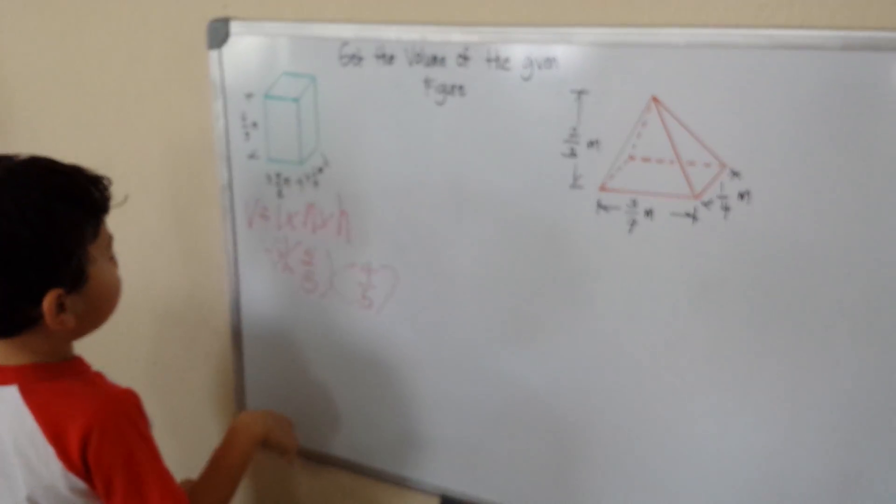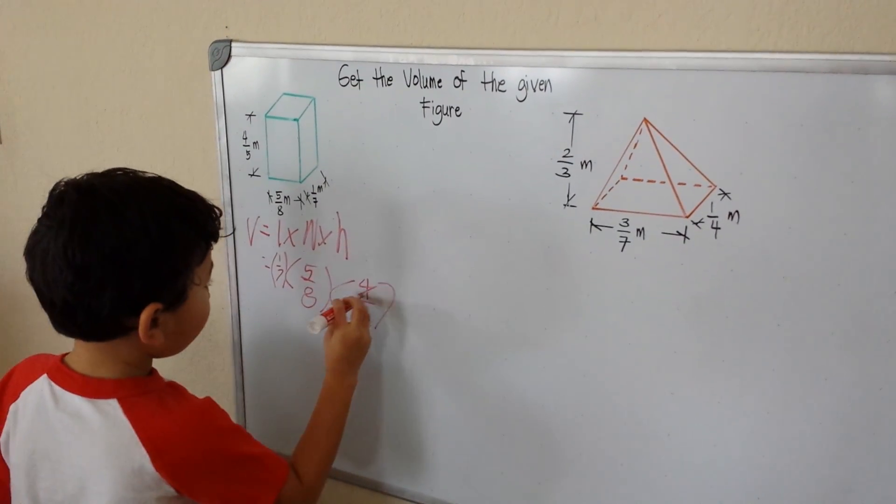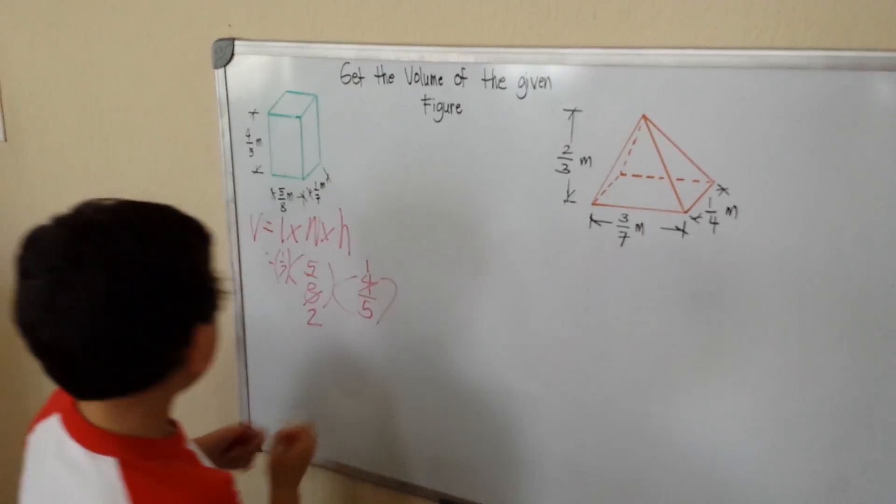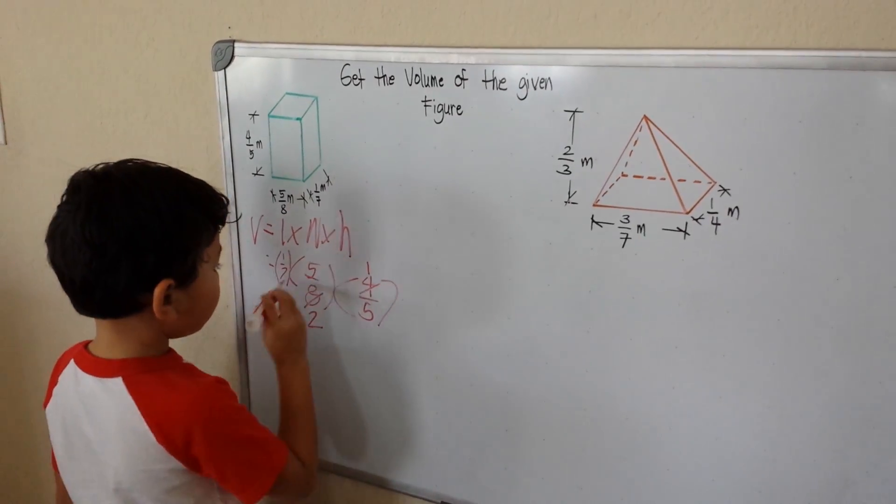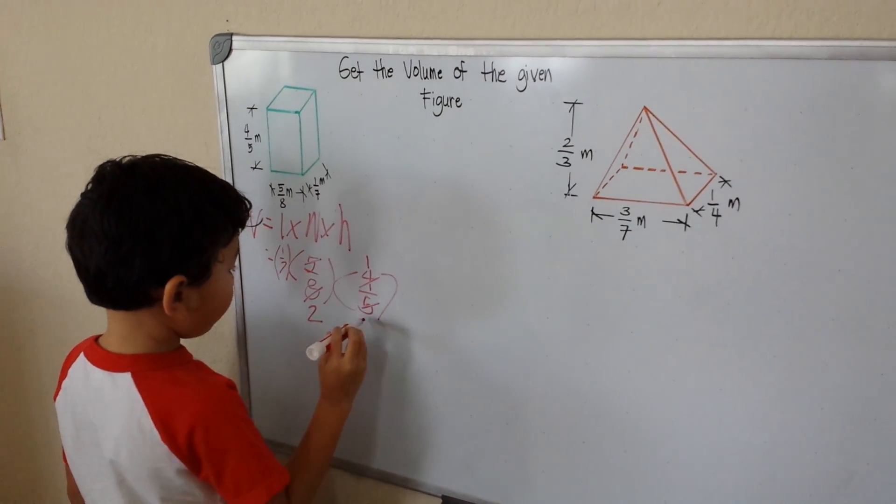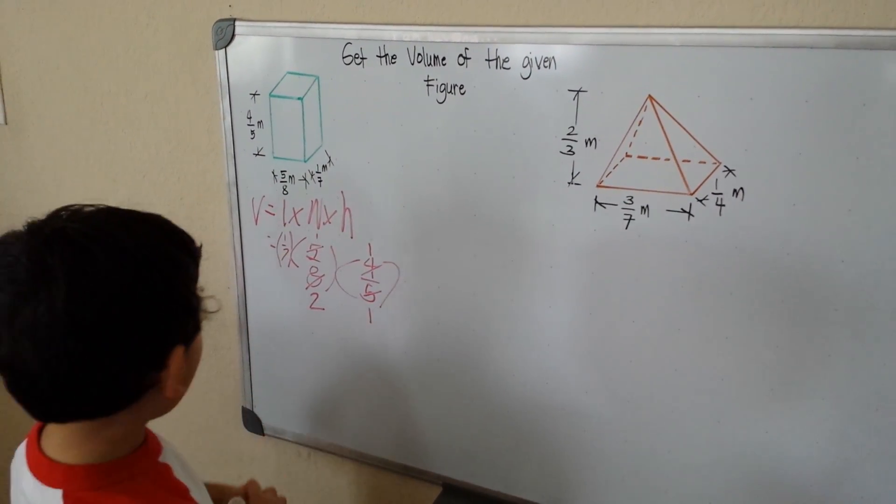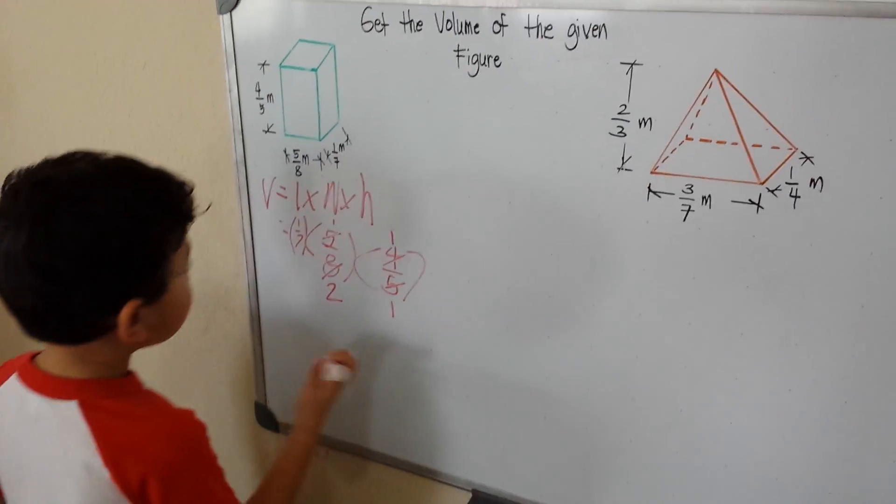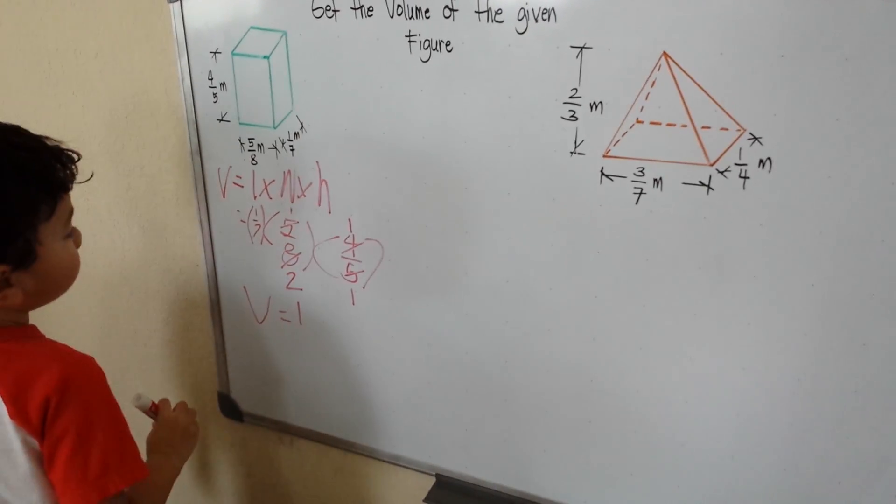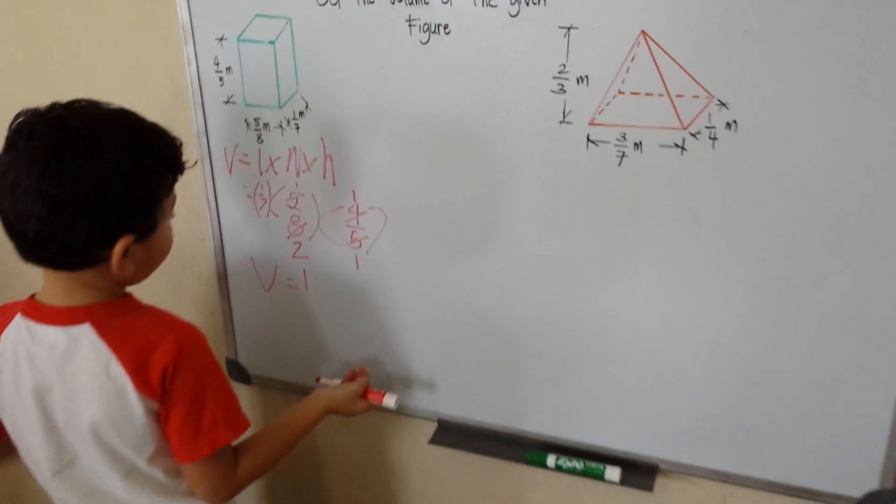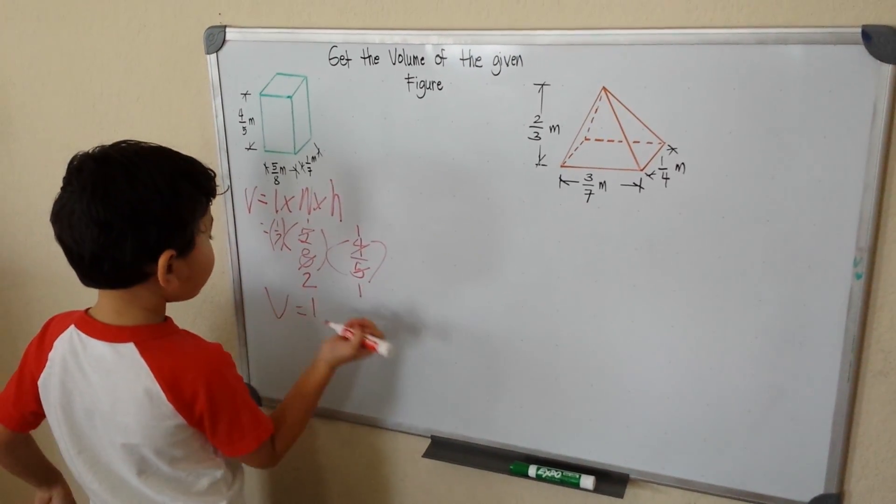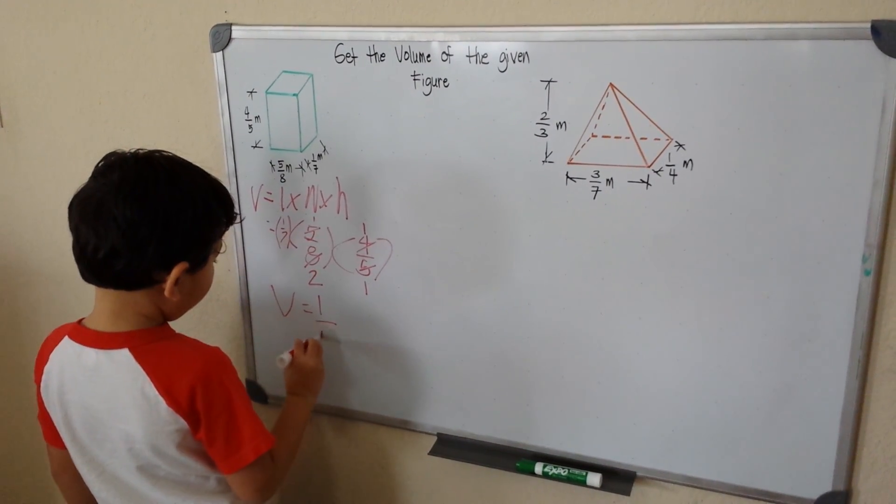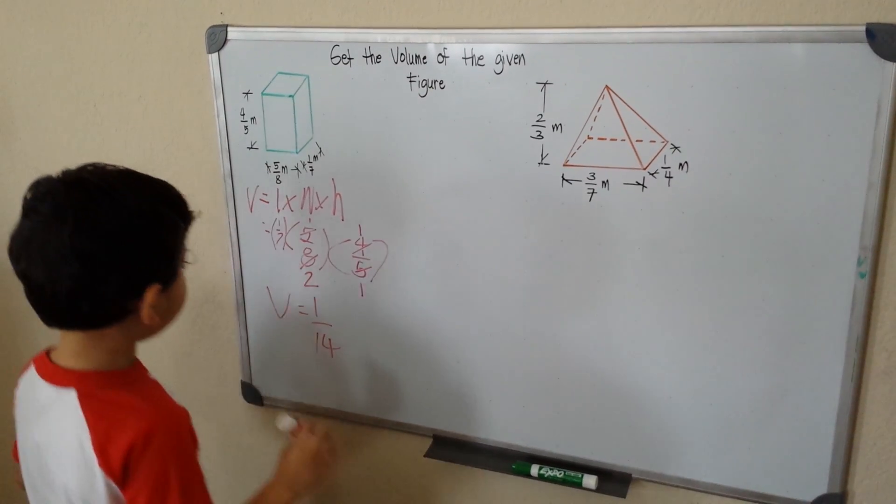So which ones can we cross cancel? 4 and 8, 2, 2 and 1. We have 5 and 5, 1, 1. Is that all? Yes. So 1 times 1 times 1 equals 1. 7 times 2 is 14, times 1 is 14. So 1 over 14.